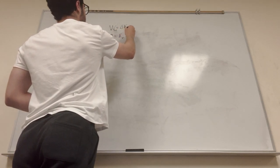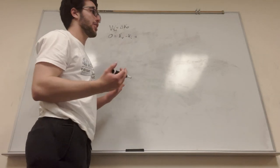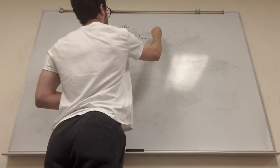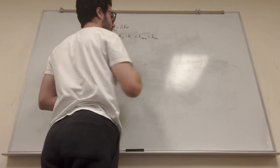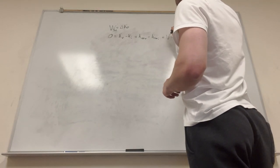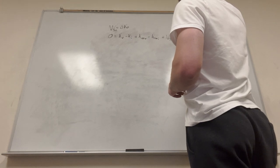So it'll be kinetic energy final minus kinetic energy initial. And then we have k rotational, so k rotational final minus k rotational initial. And we also have gravitational potential energy, so plus u gravity final minus u gravity initial.